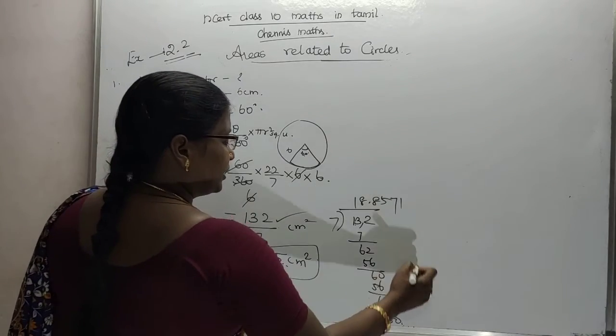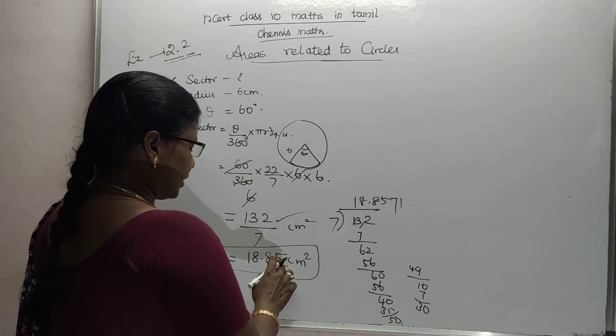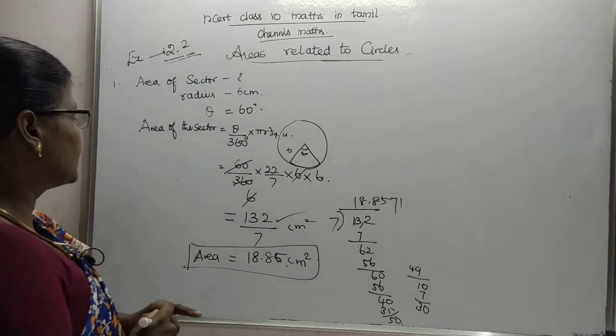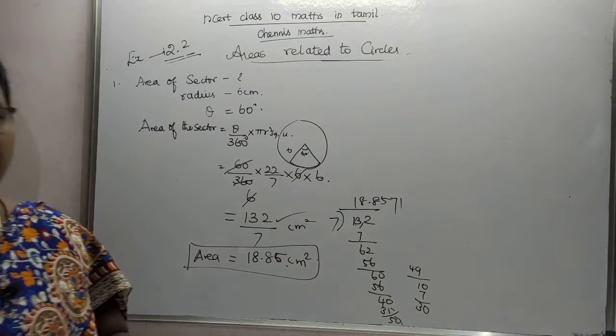You can go there. 10, 1, 7, 30. Now it is 8, 5, 7, 1 and 8, 6. That's all the answer. This is the area of the sector of angle 60 degrees.